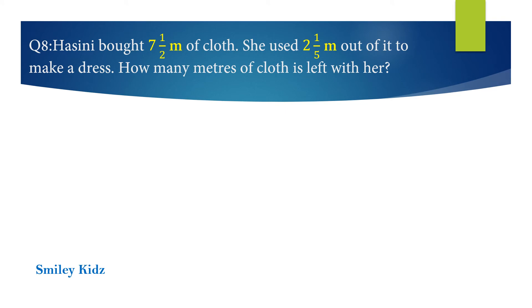Question number 8: Hasini bought 7 and 1 by 2 meters of cloth. She used 2 and 1 by 5 meters to make a dress. How many meters of cloth is left with her? Your time starts now.